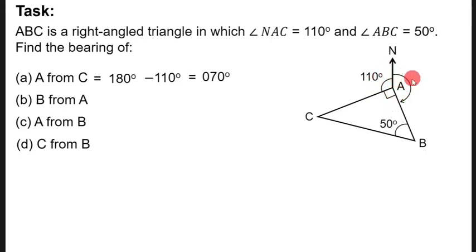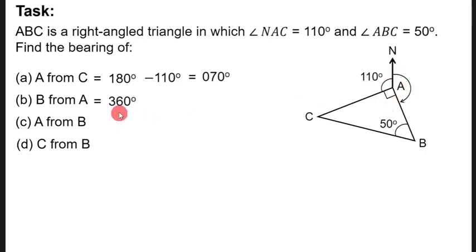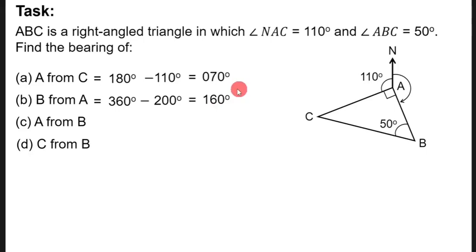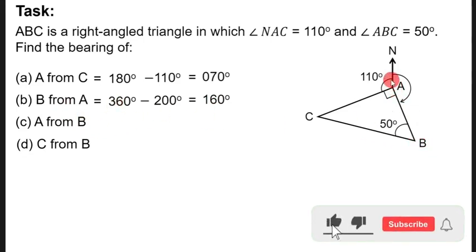A complete circle gives us 360 degrees. We know two parts of the circle: 110 degrees and 90 degrees, which together make 200 degrees. So the remaining angle equals 360 minus 200, which gives us 160 degrees. This is the bearing of B from A.